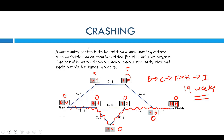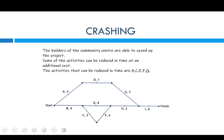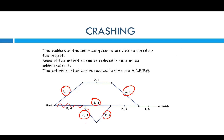Let's have a look at the next question. The builders of the community centre are able to speed up the project. Some activities can be reduced in time at additional cost. The activities that can be reduced are A, C, E, F, and G. However, A, G, and E are not in the critical path — the critical path went the other way — so reducing those will not reduce any time for our project. Only C and F will work.